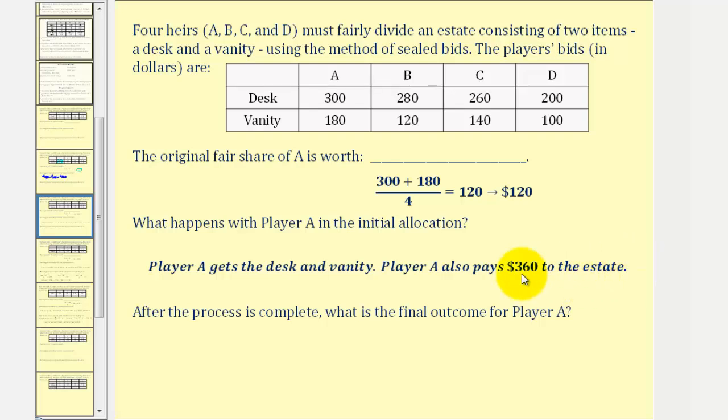Now for the last question: after the process is complete, what is the final outcome for player A? Before we answer this question, we will have to determine the fair share for player B, C, and D. To save some time, I've already done this.